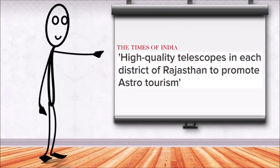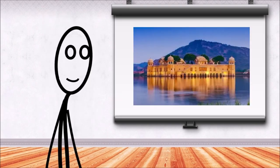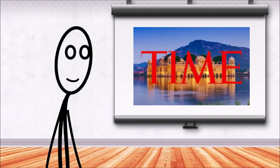Number 5. Astro-tourism to be promoted by Rajasthan state government in India. As part of this initiative, high-quality telescopes will be set up in each district. Jaipur, the capital of Rajasthan, was described as an astronomical haven by the Time magazine.